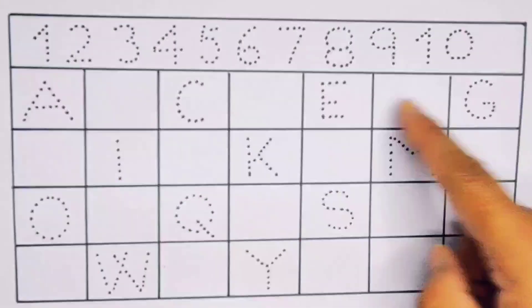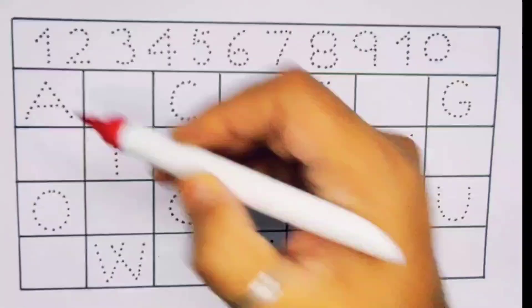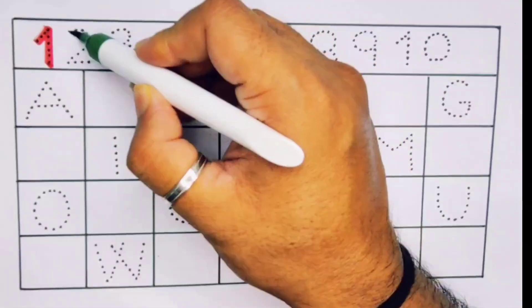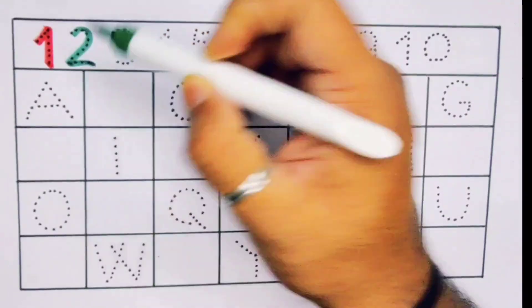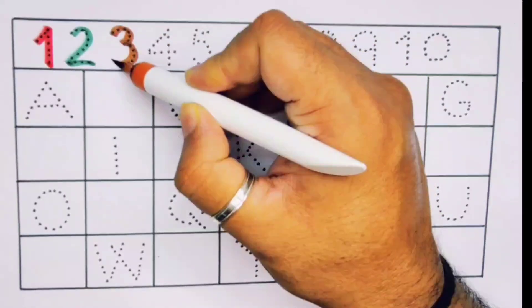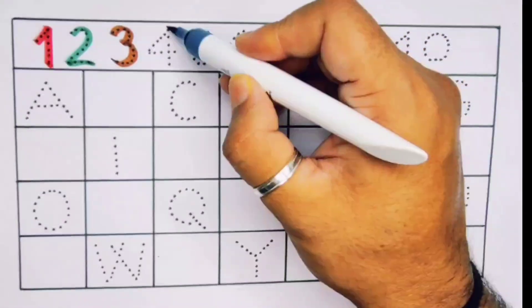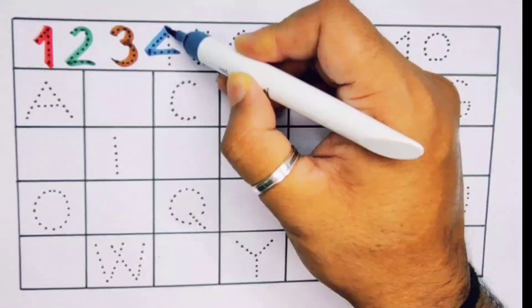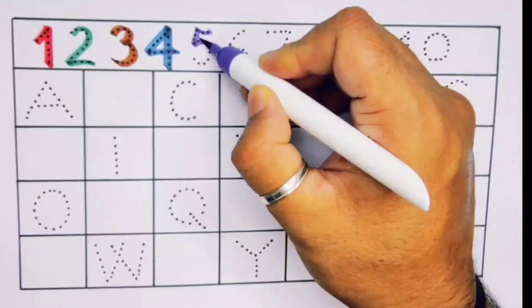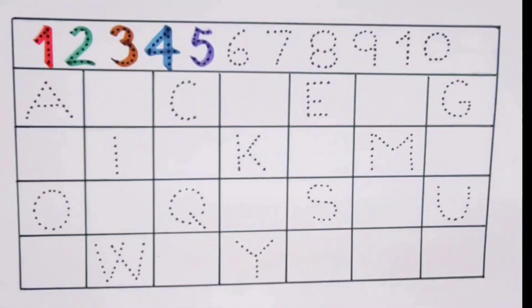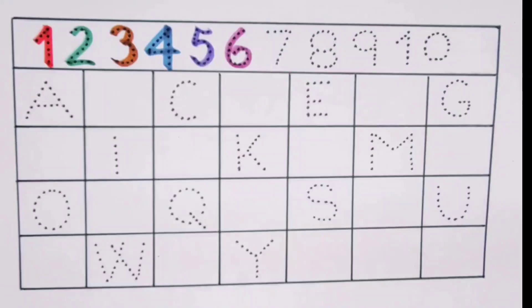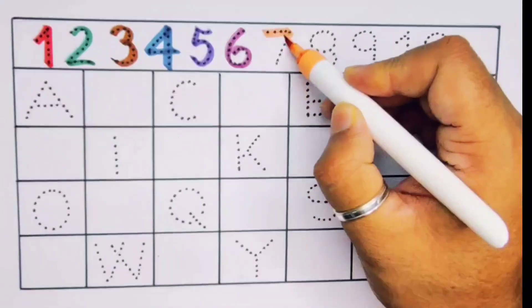First, one, number one. Next, two, number two. Next kids, it's three, number three. Next, four, number four. Next, five, number five. Next kids is six, number six. Next, seven, number seven.